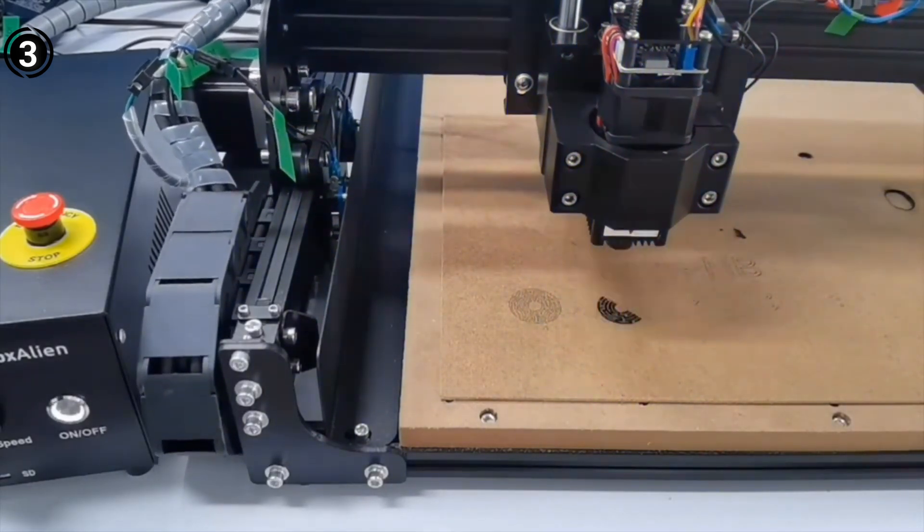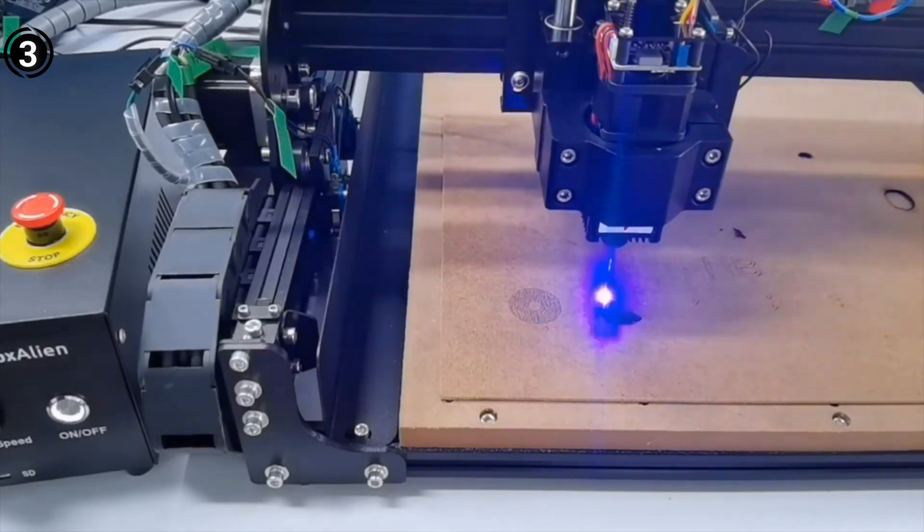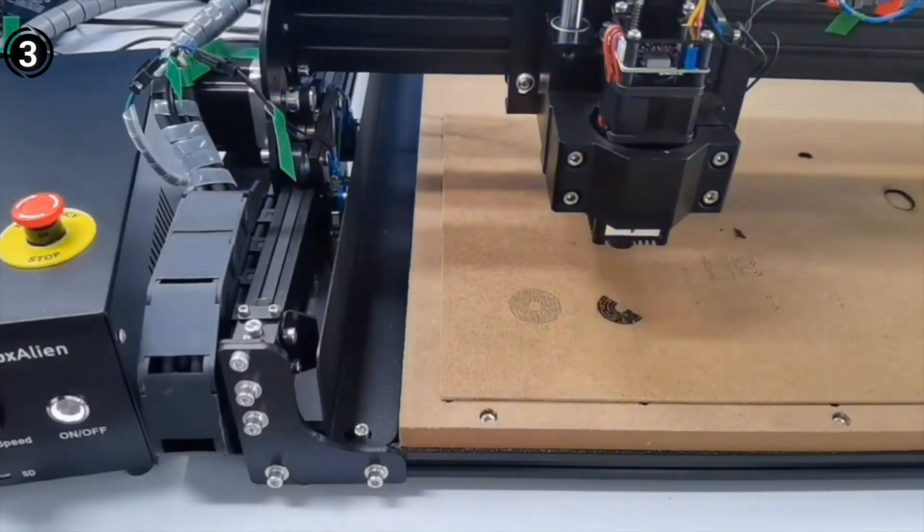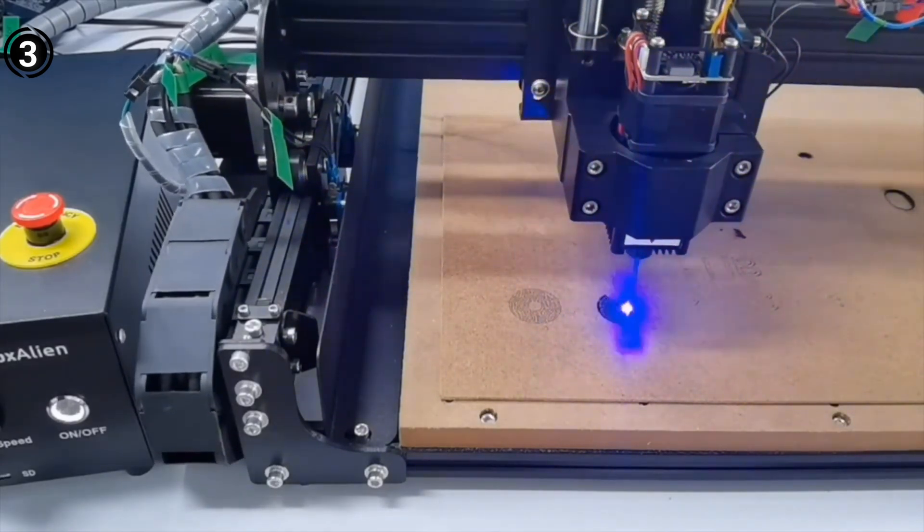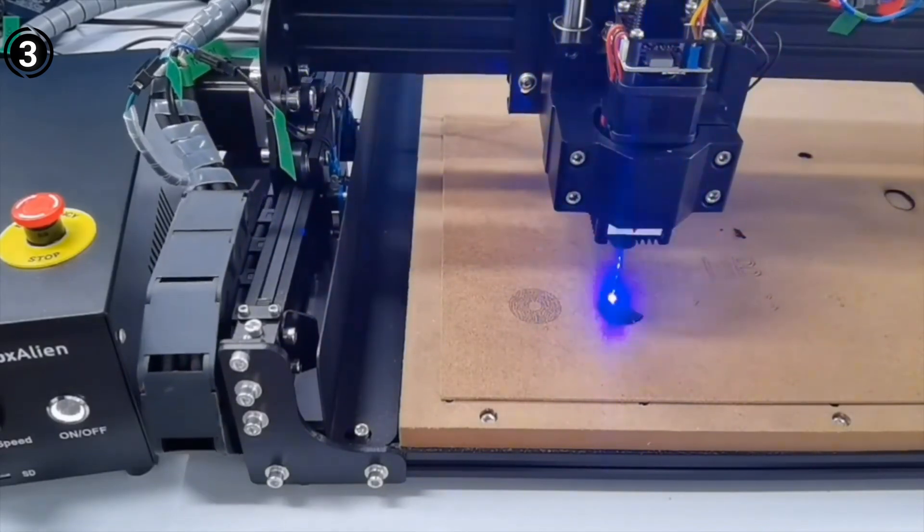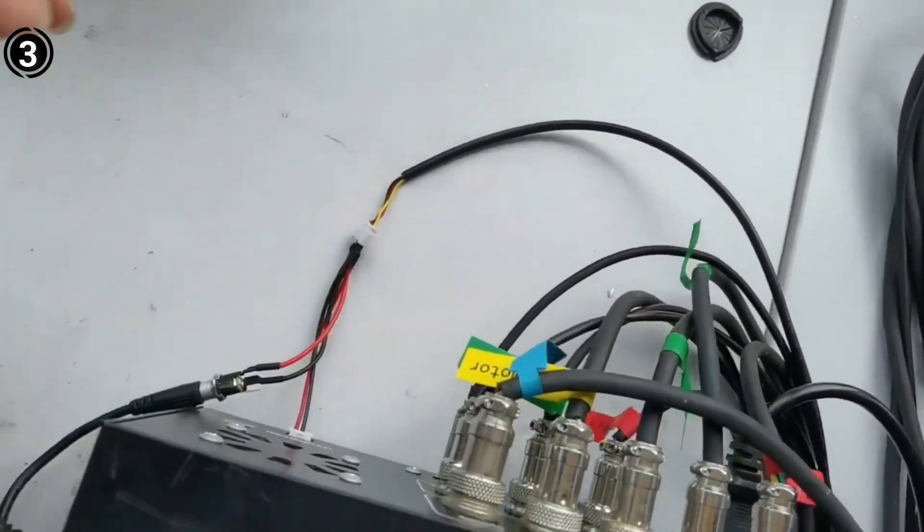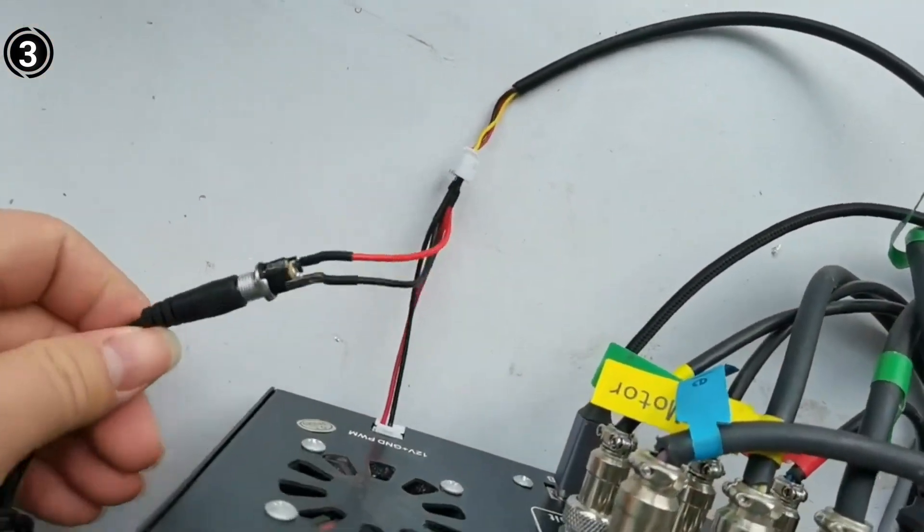The spindle speed control, with a range from 0 to 10,000 millimeters, provides precise control, ensuring clean cuts and engravings, even as a beginner. The compatibility with GRBL control software has opened up a world of resources and tutorials, making the learning process enjoyable and accessible.